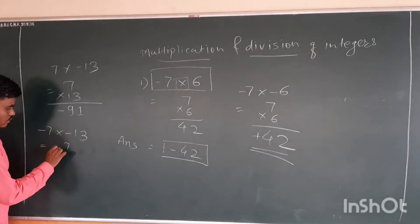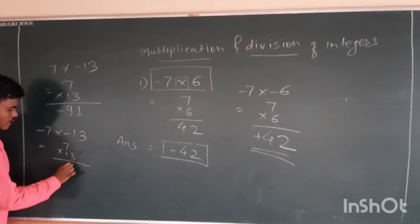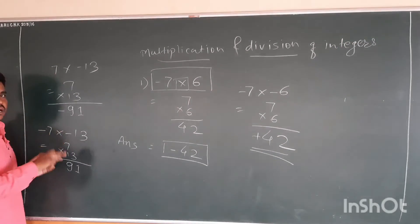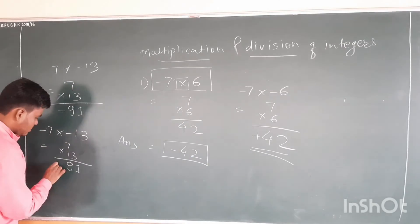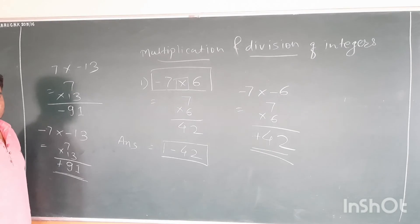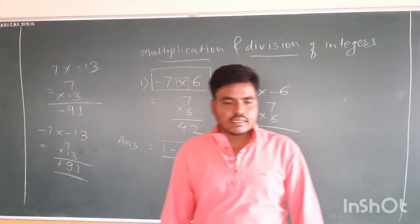7 into 13, 91. This is minus, here is minus. Here is minus, minus minus - opposite is plus. The answer is plus 91. Okay? Understand?